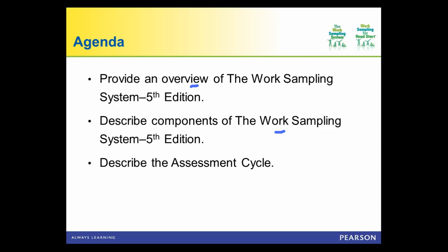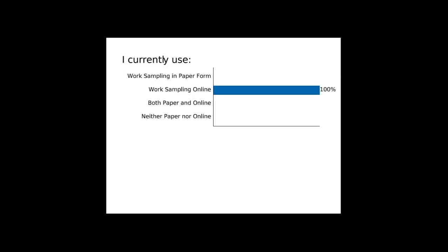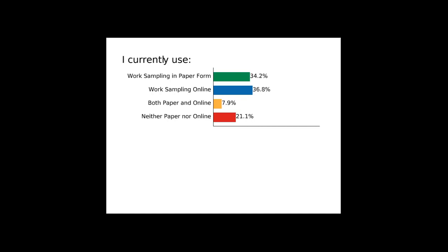Before I get started, I'd like to get a sense of who we have with us today. Please respond to this statement: I currently use Work Sampling in paper form, Work Sampling online, both, or I do not use Work Sampling at all. Select your response and click Submit. It seems like a number of you are familiar with Work Sampling, whether in paper or online form, and several of you have not yet used the Work Sampling System. Thank you for your response.